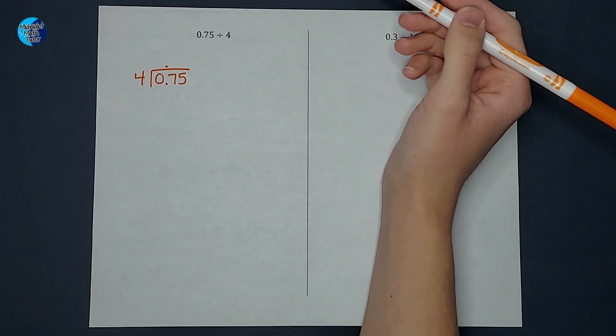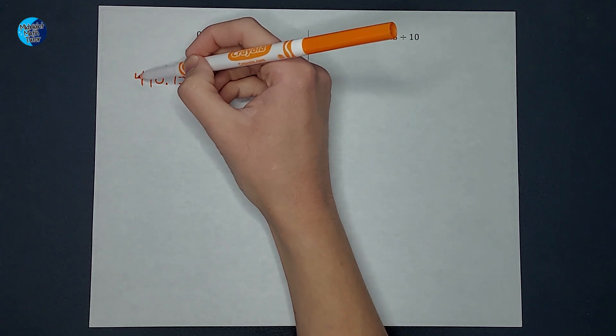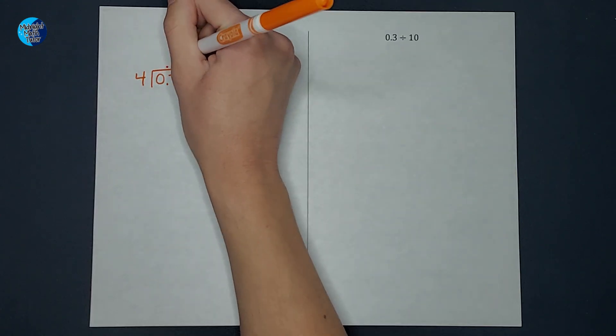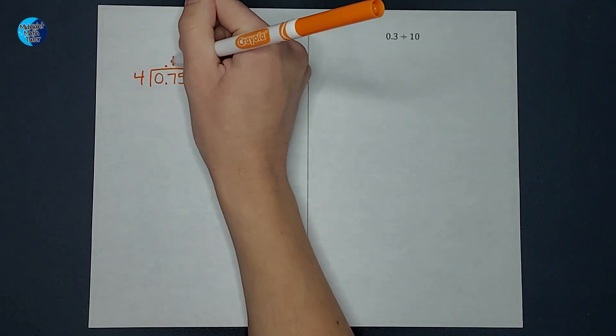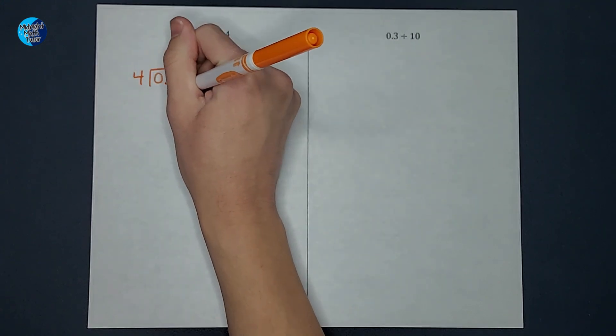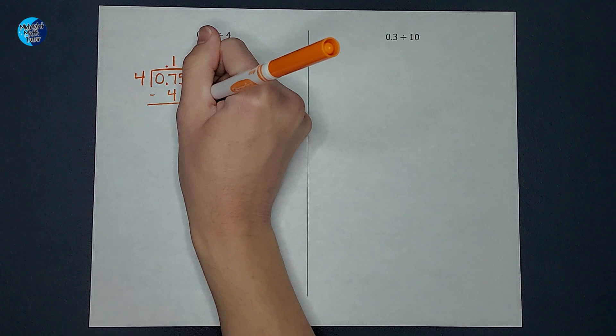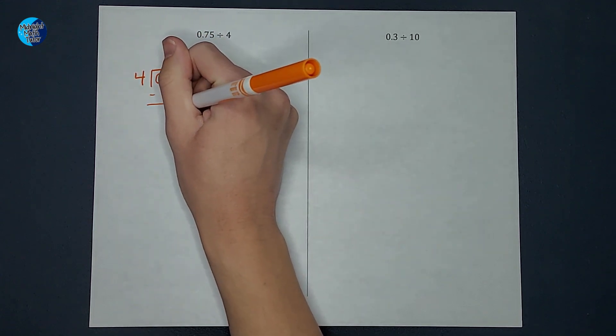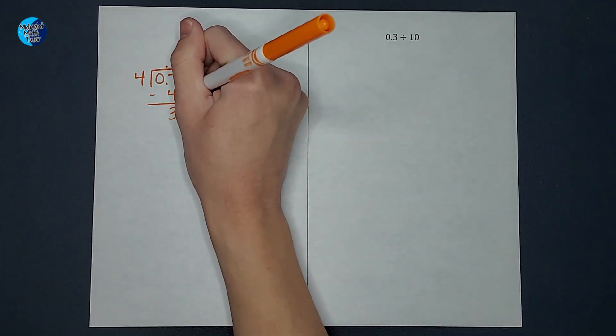Then I just go ahead and ask myself, well how many times does 4 go into 7? Well it goes once. 1 times 4 gives me 4. When I subtract that I get 3. I'm going to pull down this 5.